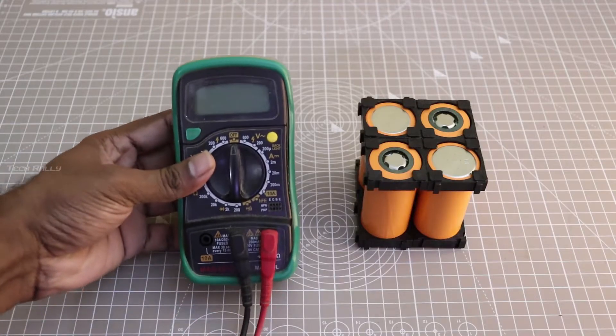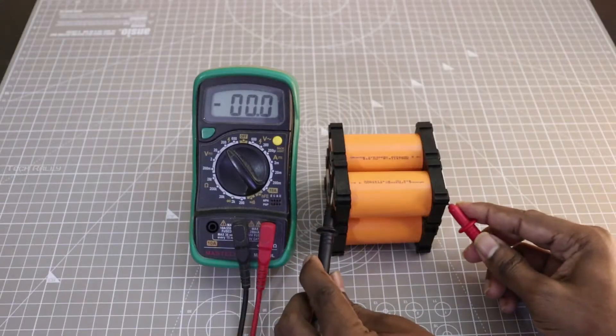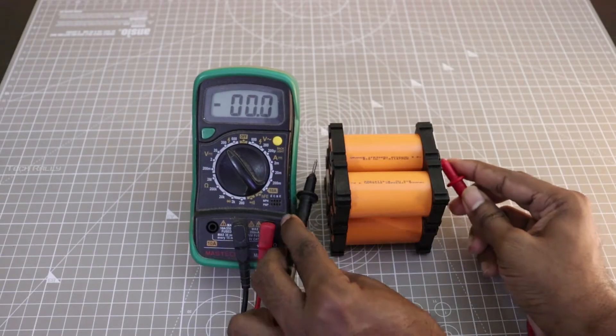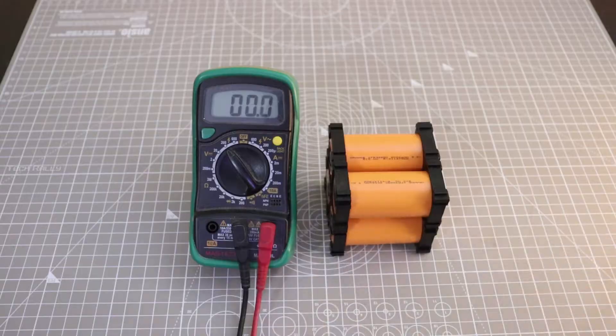Before building the battery pack, we need to make sure all battery voltages are equal. If not, each cell voltage will not be properly balanced.